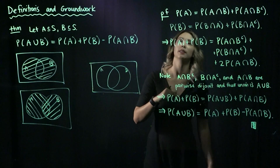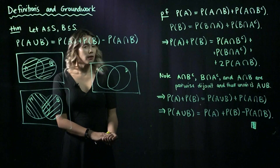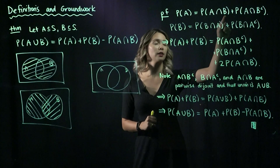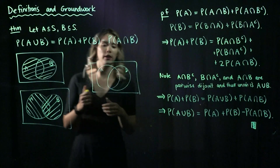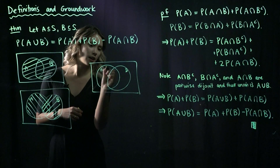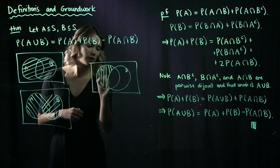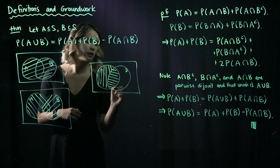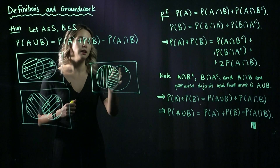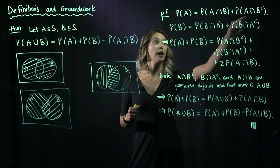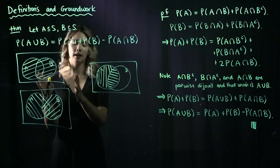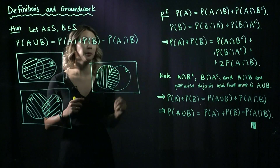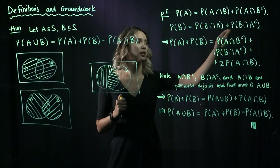Now let's look at the actual proof. Let's start by looking at the probability of A and the probability of B. For the probability of A, we can split A up into the part of A that intersects with B — the horizontal striped part — and the part of A that does not intersect with B, the vertical striped part. So the probability of A equals the probability of A intersect B, plus the probability of A intersect B complement. By the exact same line of thought, the probability of B equals the probability of B intersect A, plus the probability of B intersect A complement.